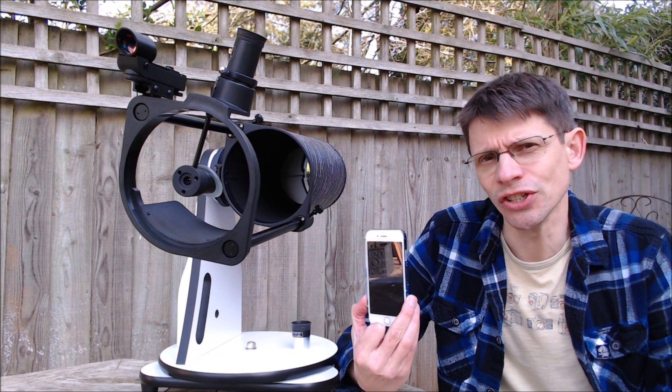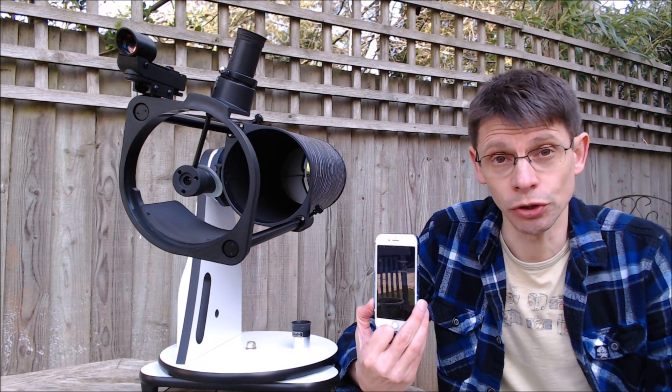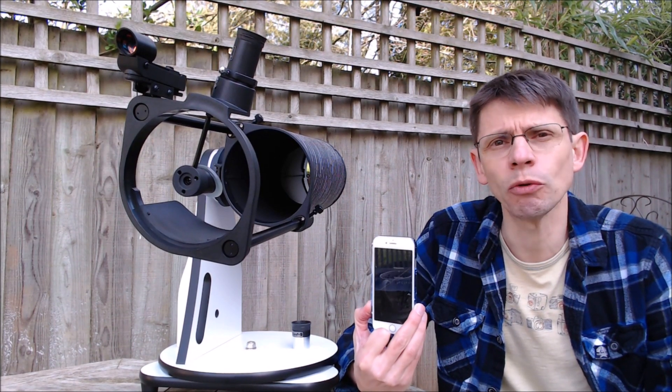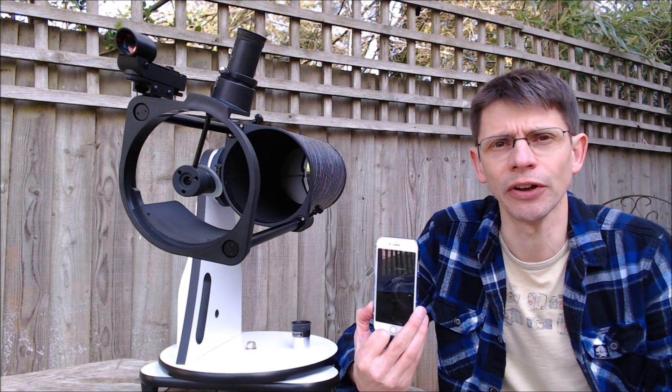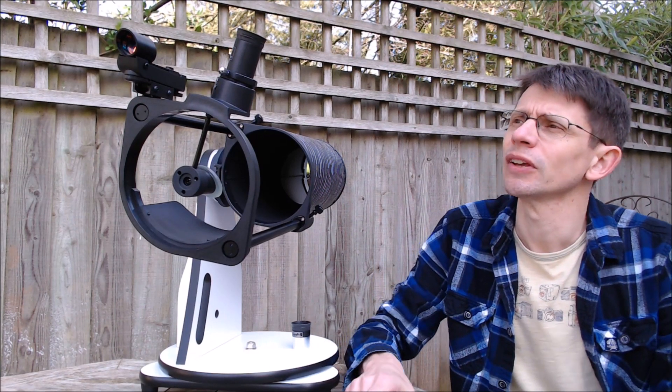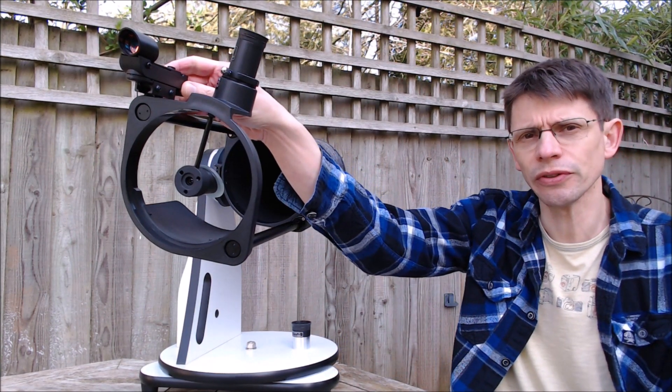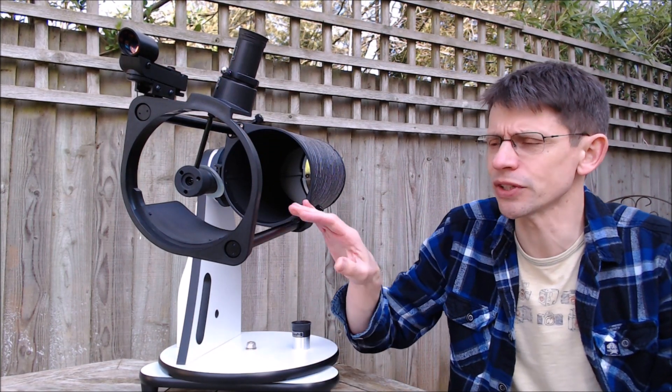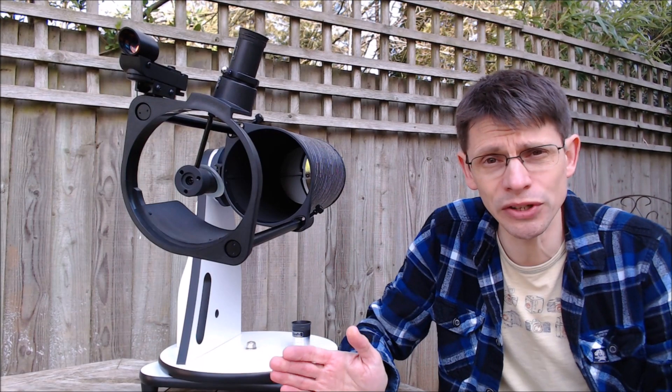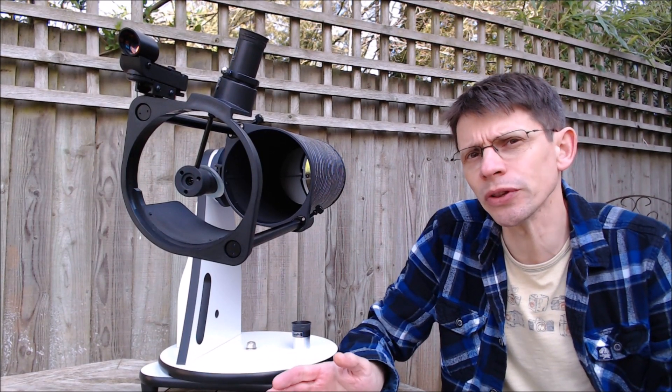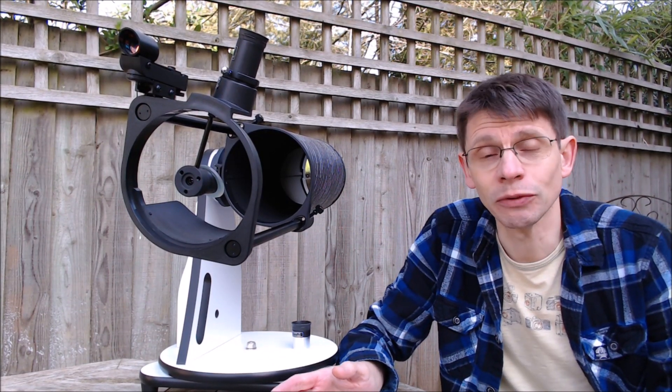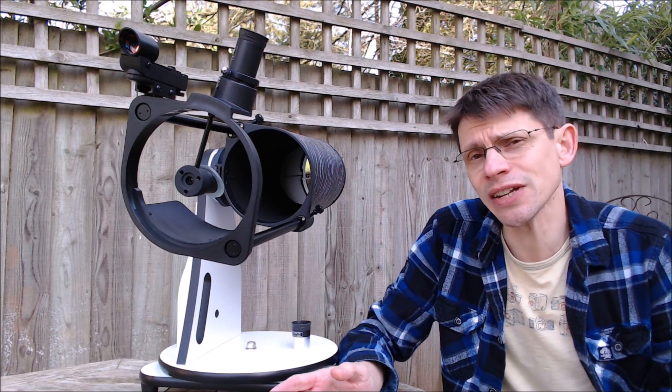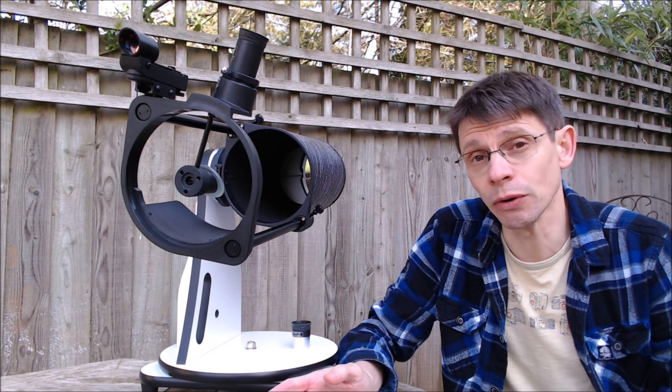Besides that, I suggest you download a good sky app onto your phone such as Sky Guide, and that will really help you to find your way around the night sky. Now in the first video we saw the red dot finder and we saw that if it's lined up well with the telescope tube, and you only need to do that once, then it should help you to point the tube and the telescope accurately given a place in the night sky. And I'd say that this red dot finder works very well.